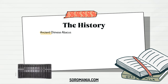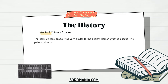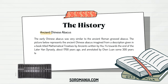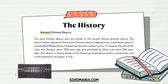The Ancient Chinese Abacus was very similar to the Ancient Roman Grooved Abacus. It is imagined from a description given in a book titled Mathematical Treatises by Ancients, written by Suyo towards the end of the later Han Dynasty about 1,700 years ago, and annotated by Chen Luan some 300 years later. This abacus is closely similar to the Roman Grooved Abacus both in construction and in the method of calculation, and it may well be assumed that the Roman Grooved Abacus was introduced to China in earlier days.